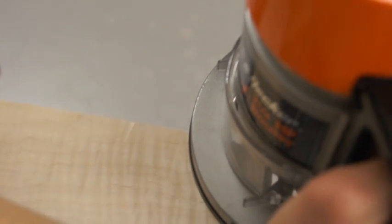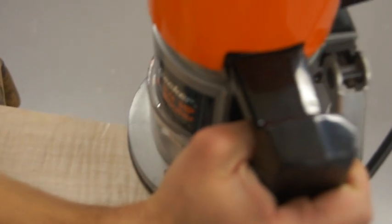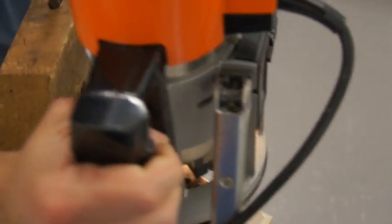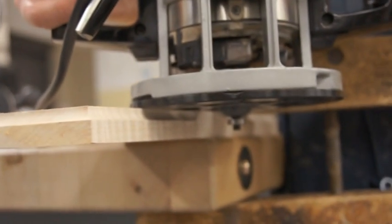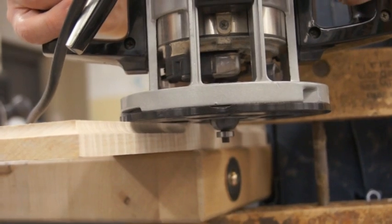The following is the required way to finish the routing operation. With the base still resting on the work, move the bit away from the edge, turn off the router, and then wait for the bit to stop spinning before removing the base from your work.